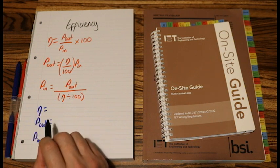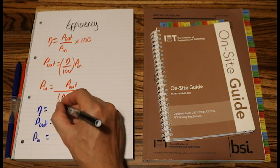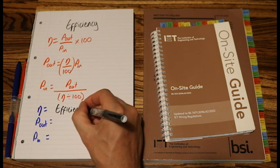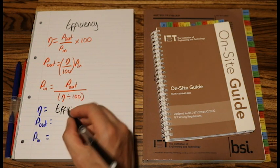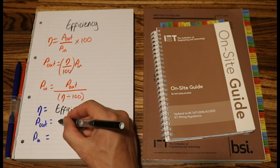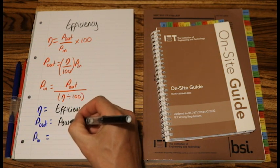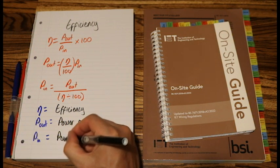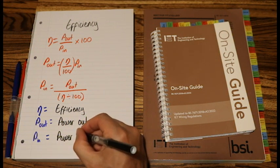So this funny N, that equals efficiency. Power, or P out, is power out, and P in is power in.